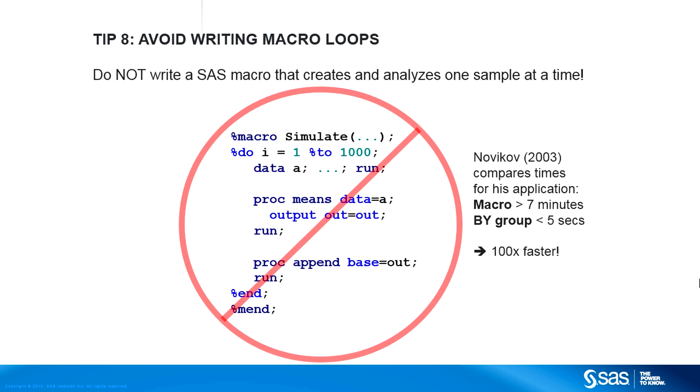It takes time to initialize, run, and shut down a procedure. If each procedure call performs only a tiny amount of work, most of the time is spent starting and stopping the procedures rather than crunching numbers. In contrast, the by-group approach starts and stops procedures only once, and each procedure performs many computations. The by-group approach can easily be hundreds of times faster than a macro loop. So tip number eight is to avoid writing macro loops.